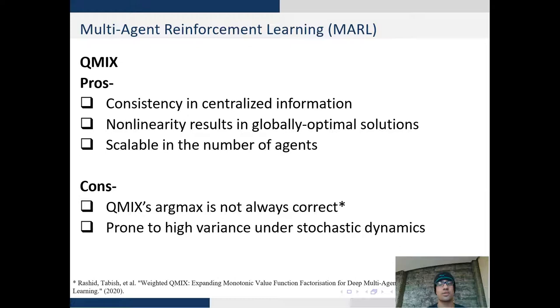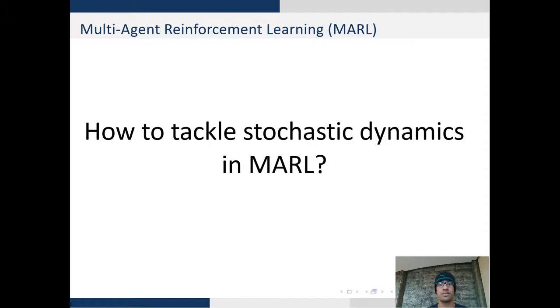recent work shows that Q-mix's argmax operation is not always correct when the projection space is quite large. Secondly, Q-mix is prone to high variance because of stochastic dynamics which continue to be a problem.